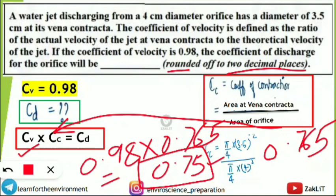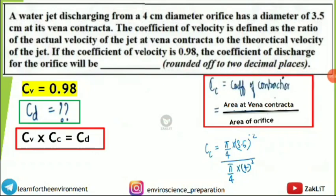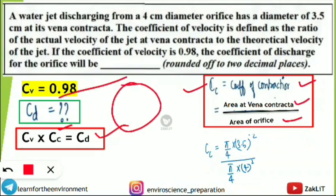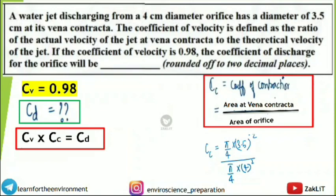Rounded to two decimal places, the answer is 0.75. To summarize: remember cv × cc = cd, where cv is the coefficient of velocity (0.98 here), cc is the coefficient of contraction (found using area at vena contracta ÷ area of orifice), and cd is the coefficient of discharge. Knowing these two formulas gets you full marks in one or two minutes.